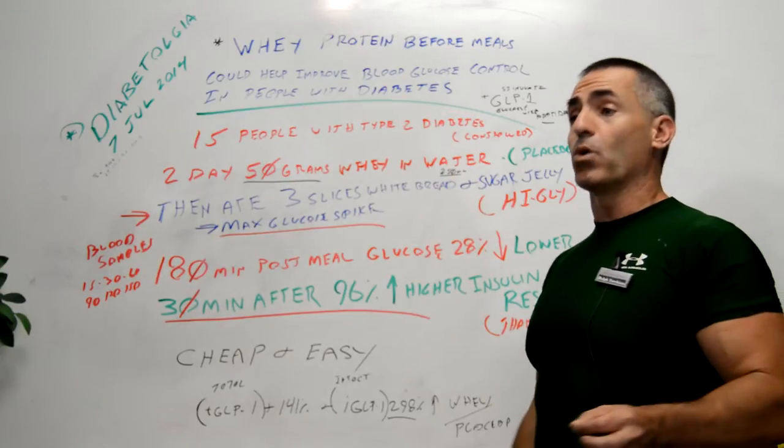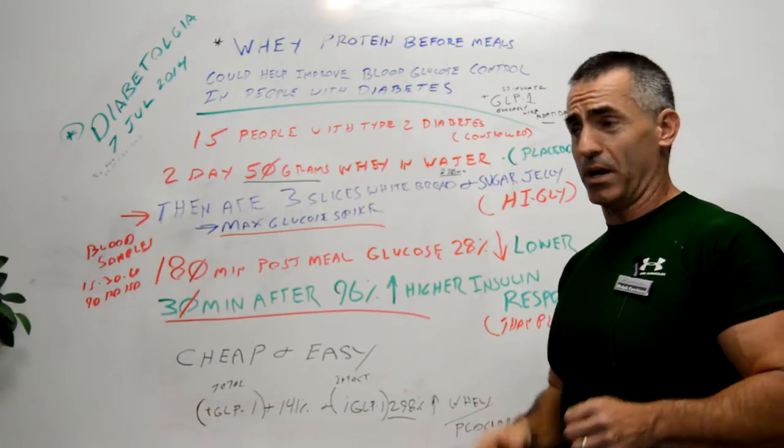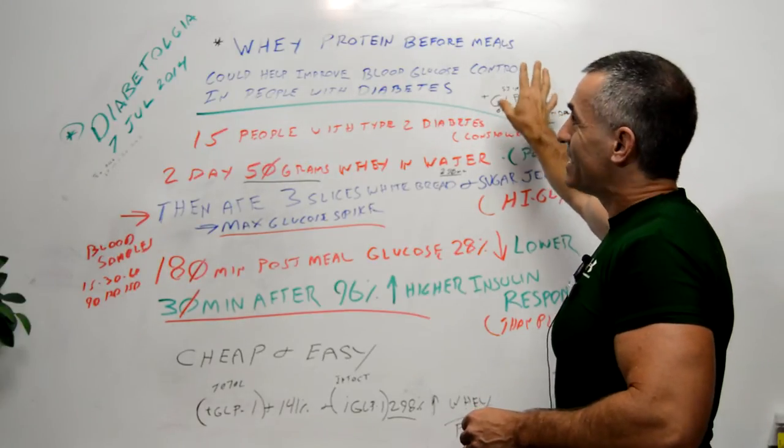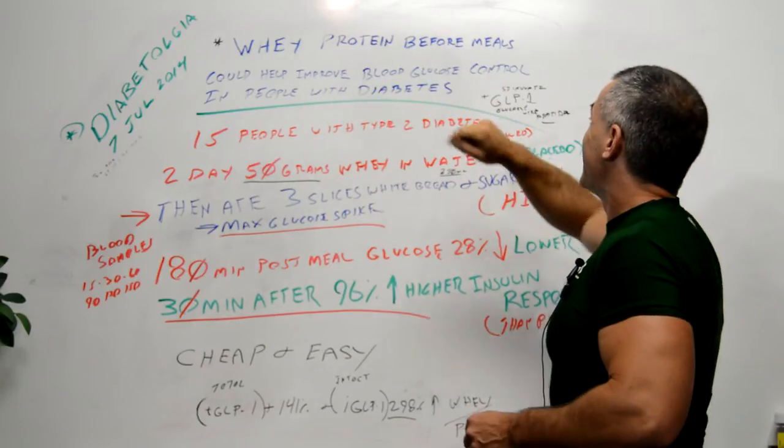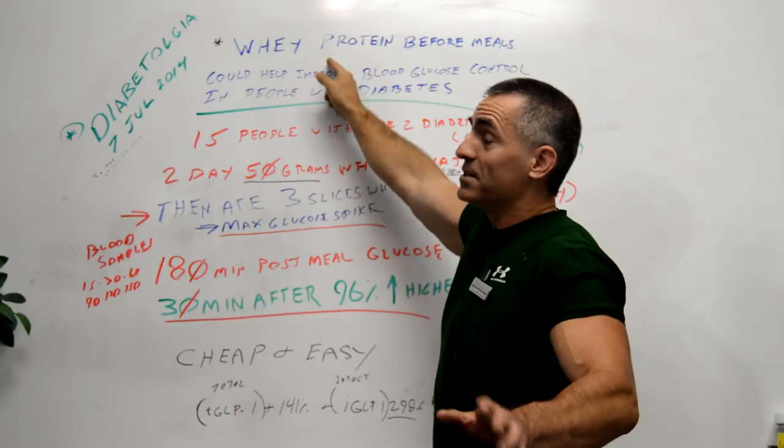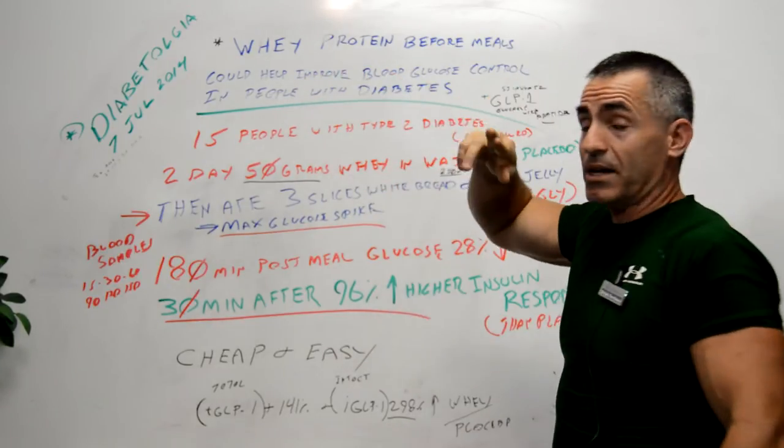Originally, what they were looking for was to measure this hormone called GLP-1, otherwise known as glucagon-like peptide-1, to see if whey protein can stimulate GLP-1. Now, remember I say whey protein because there could be a lot of different wheys out there for cooking and things like that, but whey protein specifically in a concentrate form.